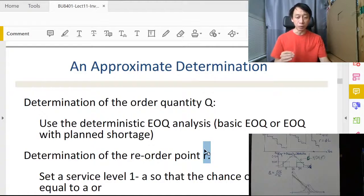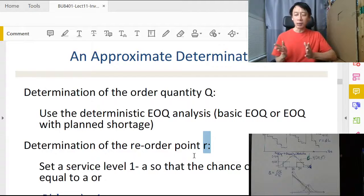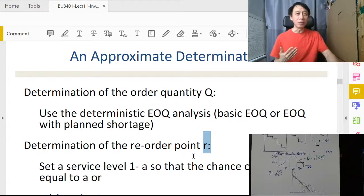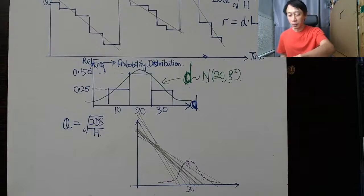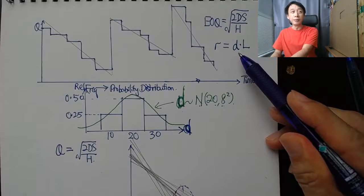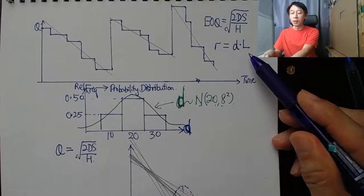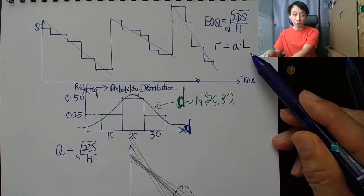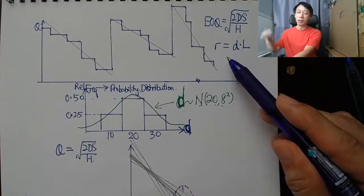Earlier on in our constant demand EOQ analysis, our R was kind of not so interesting because we did have a formula for it. And that is more about saying that our R was the daily demand D, example 20 because it was a constant demand, times the number of days for our lead time. So if the lead time was 3, D was 20, then whenever we cross the 60—because 20 times 3 is 60—